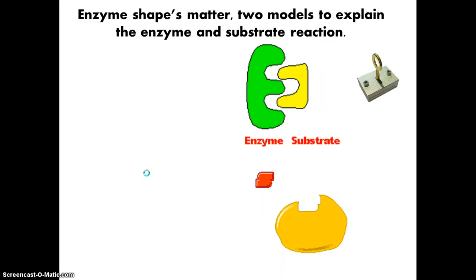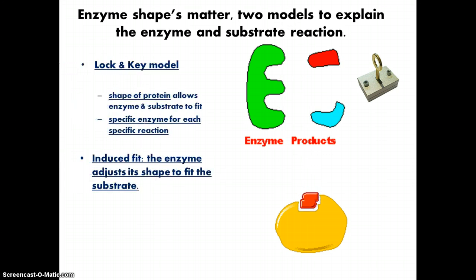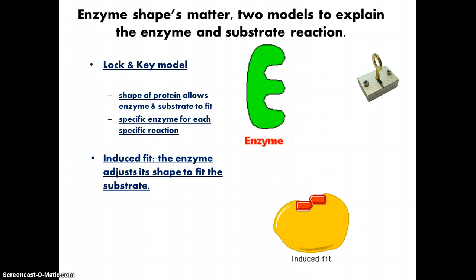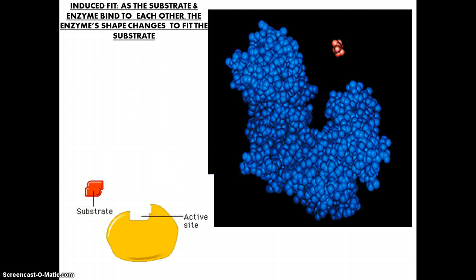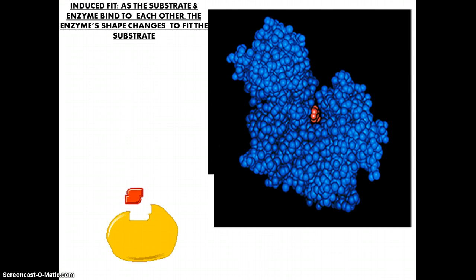So again, shape matters, and there's two types of models. One is the lock and key model, just as a key fits into a lock, a substrate fits with the enzyme. Now, there's also another model called the induced fit model, meaning the enzyme adjusts its shape to fit that substrate. So if you look at this, here's an enzyme, the red is the substrate, and when you bind, it moves. It adjusts its shape, and that's called induced fit.